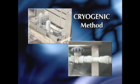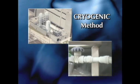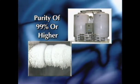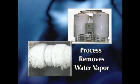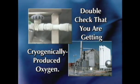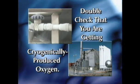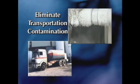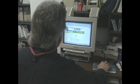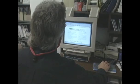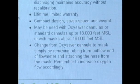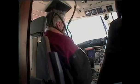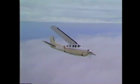Most aviation oxygen sold today in the U.S. is produced by a cryogenic method using sub-freezing temperatures, yielding oxygen purity of 99% or higher. Aviation oxygen is subject to a process that removes water vapor. It is recommended that you verify you are getting cryogenically produced oxygen, and purchase liquid oxygen as close to the production site as possible to eliminate transportation contamination. You are responsible for checking with the equipment manufacturer for the latest operational and emergency guidelines to assure your safety. By following the necessary precautions and knowing how to operate your oxygen equipment effectively, you will be able to fly more confidently and more safely.